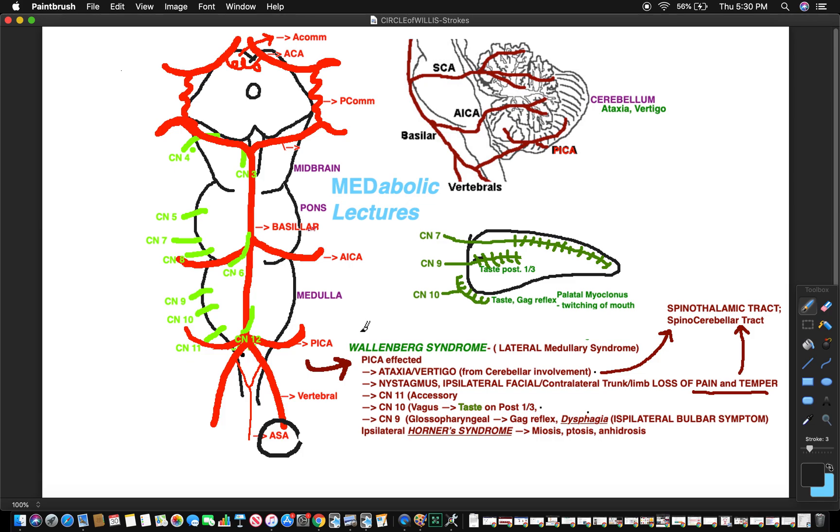First things first, if you haven't seen the previous lecture make sure you check it out. It's called Circle of Willis Introduction to Strokes Part 1. When we talk about Wallenberg syndrome, that's our discussion today.